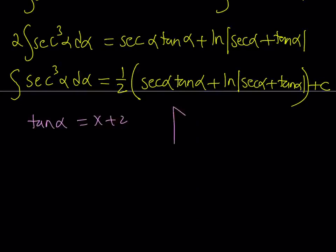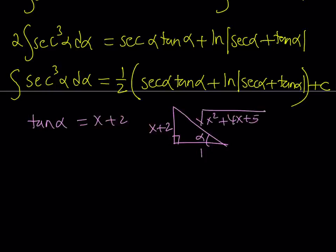I'll draw a right triangle with alpha as one of the acute angles. Since tangent alpha equals x plus 2, I'll label the opposite leg as x plus 2 and the adjacent leg as 1. By the Pythagorean theorem, the hypotenuse is the square root of (x+2) squared plus 1, which equals the square root of x squared plus 4x plus 5. Since secant is 1 over cosine, secant alpha equals the square root of x squared plus 4x plus 5.